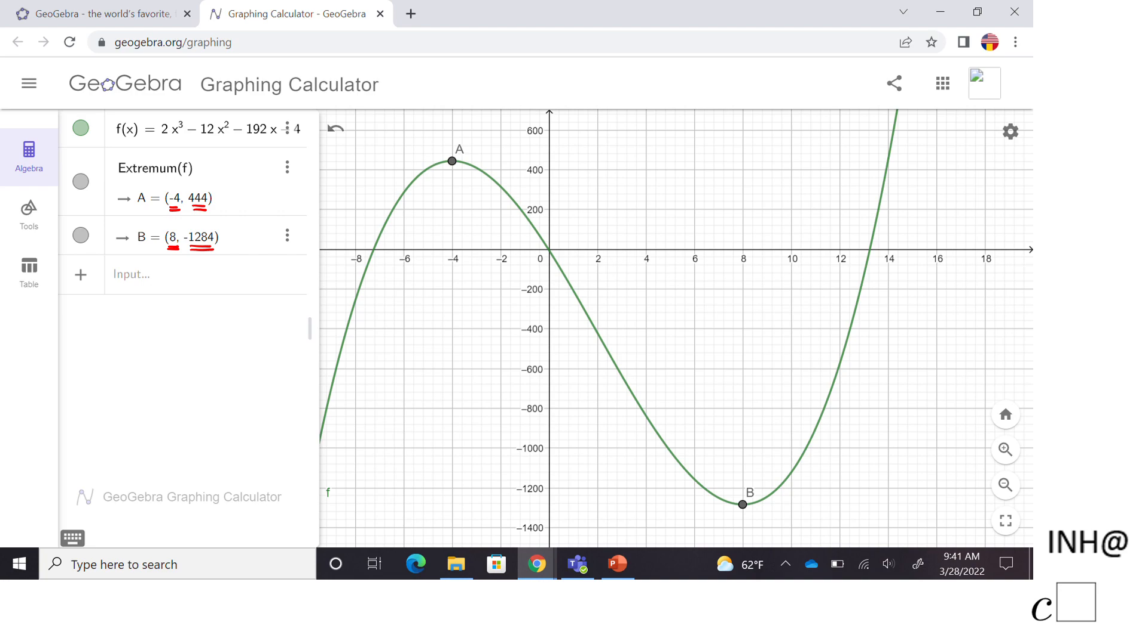Also here you can see the interval on which the function is increasing. This is one moment when the function is increasing, this is the second moment. So we have here negative infinity to negative 4, the first interval. The second interval will be 8 to infinity. I'm going to put this U here which means union. On these two intervals the function is increasing.